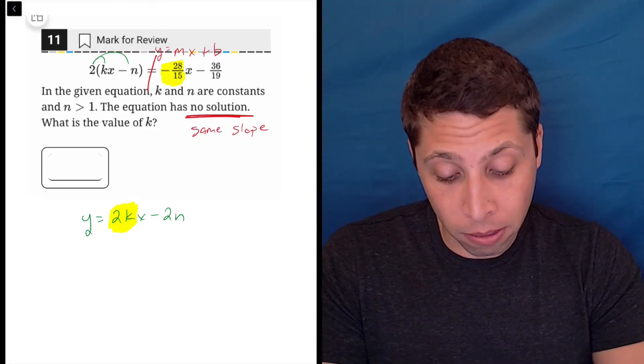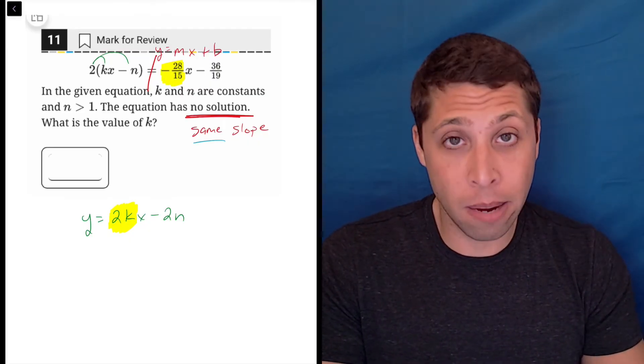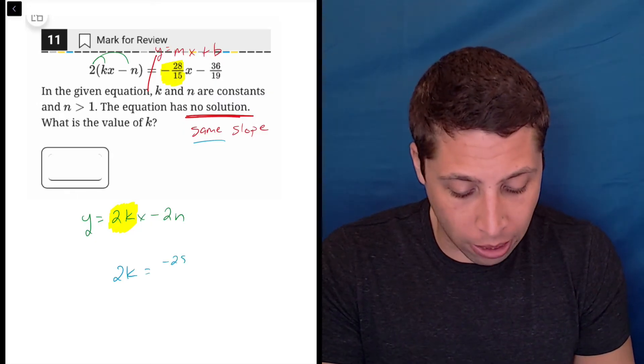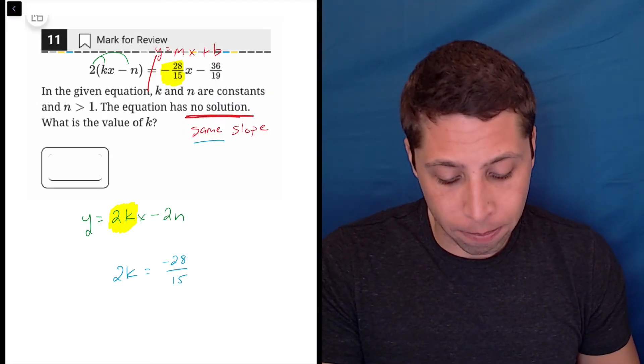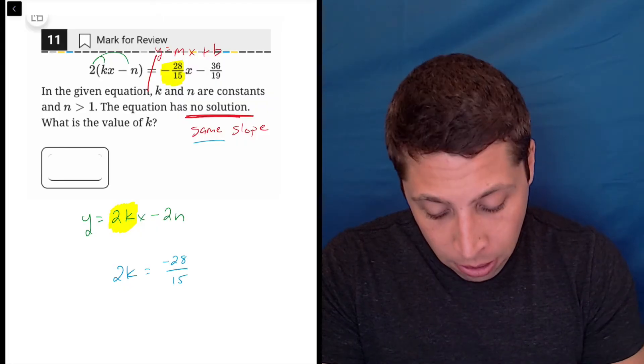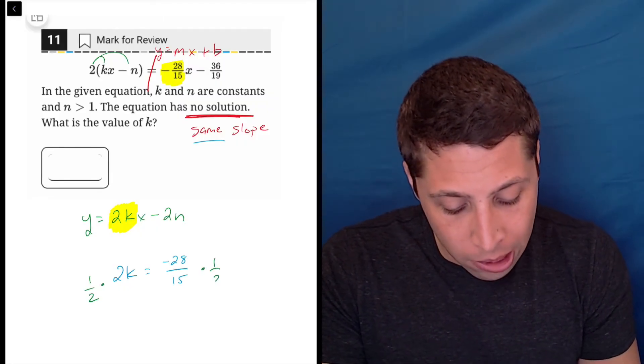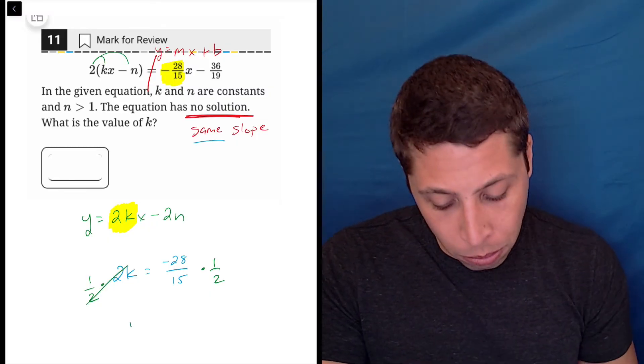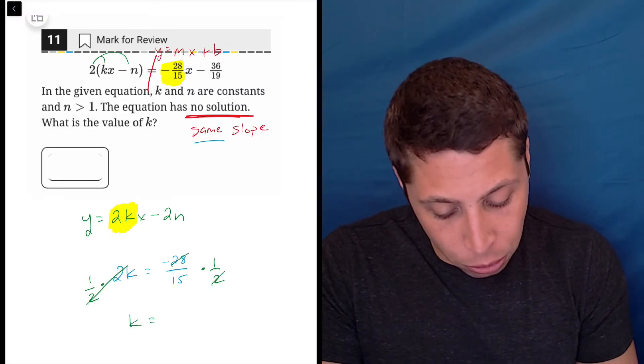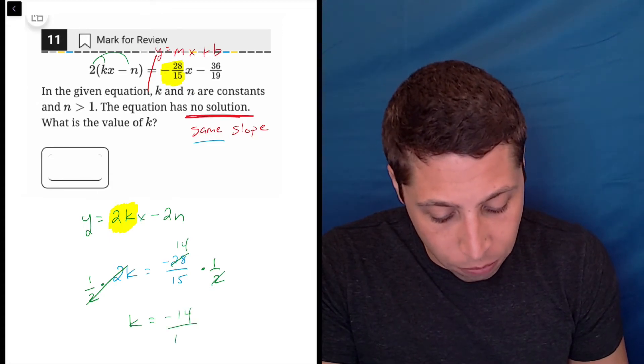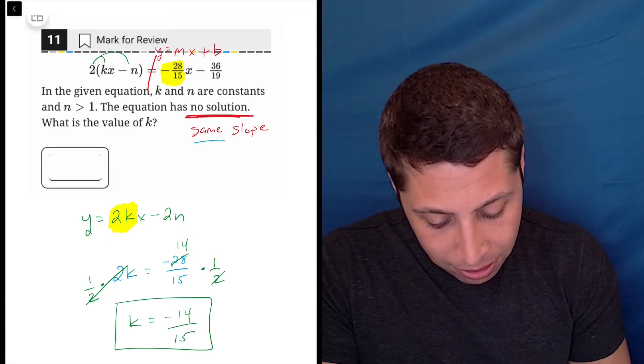So now I'm going to just say, well, if they're supposed to be the same, that means they're supposed to equal each other. So 2k is equal to negative 28 over 15. Well, let's divide, or in this case, I'd say let's multiply by one half because that's going to get rid of the 2, that's going to give me a k, and that 2 crosses out with this 28 to make a 14. So negative 14 over 15 is the answer.